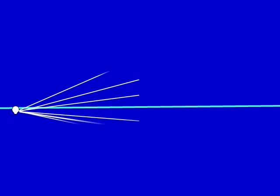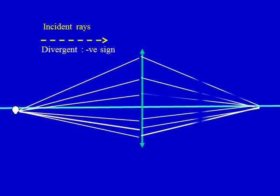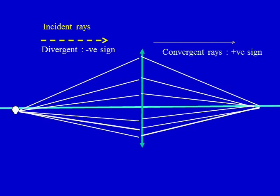If you have an object sending rays, these rays are divergent. When these rays meet a surface, rays coming to the surface are known as incident rays, and they are divergent, so they have a minus sign. If this surface has a power to converge these rays, the rays will be convergent to a point and these convergent rays get a positive sign.